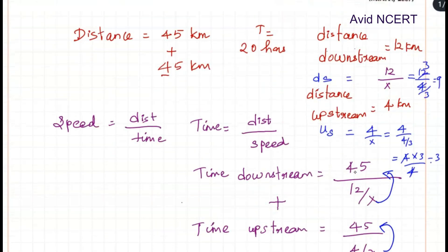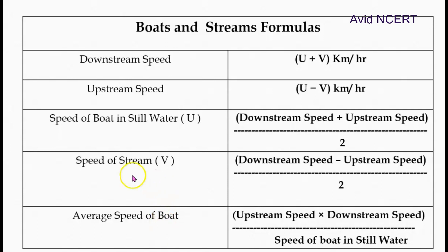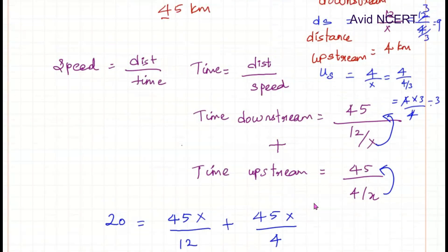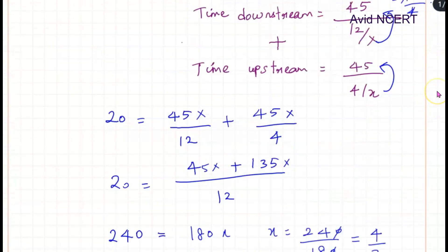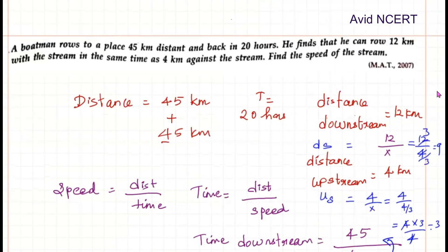Since we know the downstream speed and upstream speed, we can find the speed of the stream. Speed of stream = (downstream speed − upstream speed) / 2 = (9 − 3) / 2 = 6/2 = 3 kilometers per hour. Therefore, the speed of the stream is 3 kilometers per hour.